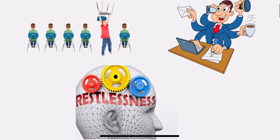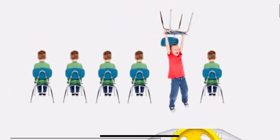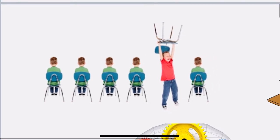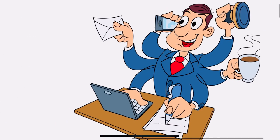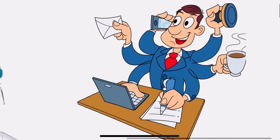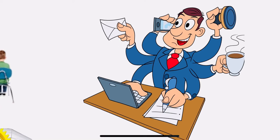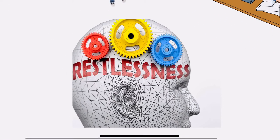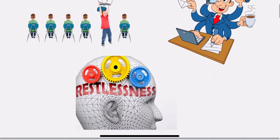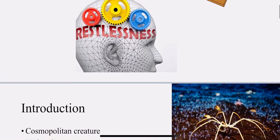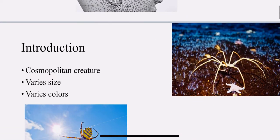Seeing the picture, you can see here the child is very active. Compared to the other children, this child is mischievous and active. In this picture, what can you guys guess? You can put it in the comment section. Here you can see the person is busy and restless. It is just a gist of the mental symptoms — we will be dealing in detail.